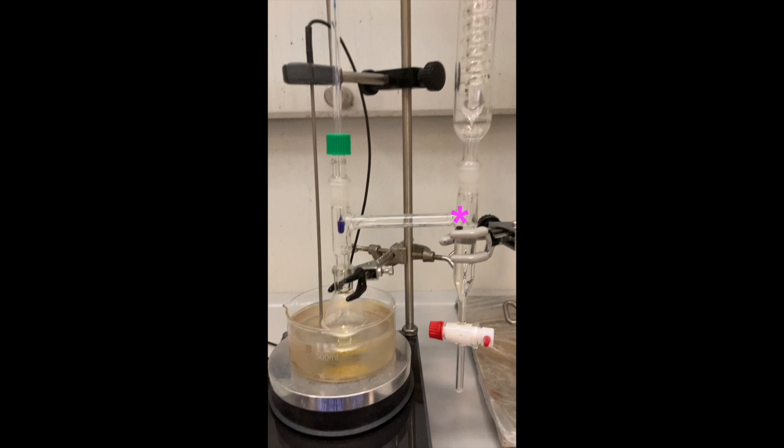A Dean-Stark apparatus is a piece of laboratory glassware used to collect water. It is used in combination with a thermometer to control the temperature and a reflux condenser.